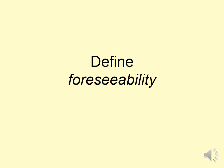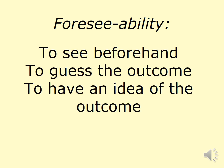Take a moment and think about the word foreseeability. If you split the word up, you've got two parts: the foresee part and the ability part — the ability to foresee. Definitions you could use include: to see beforehand, to guess the outcome, or to have an idea of the outcome.